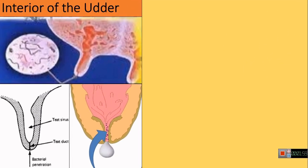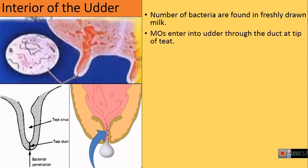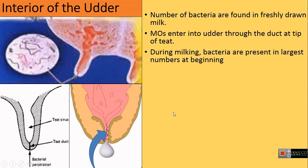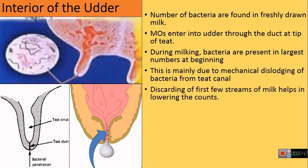The first source is the interior of the udder. The interior part of the udder is an important source of microorganisms in the milk. A number of bacteria are present in freshly drawn milk. Microorganisms enter the udder through the duct present at the tip of the teat. During the process of milking, bacteria are present in large numbers at the beginning and their number decreases gradually, mainly due to the mechanical dislodging of bacteria from the teat canal where their number is probably very high.